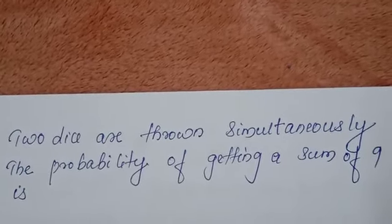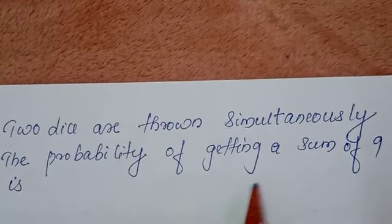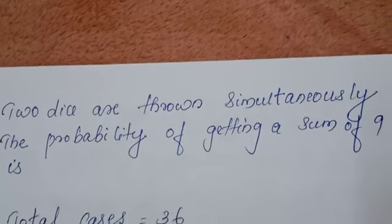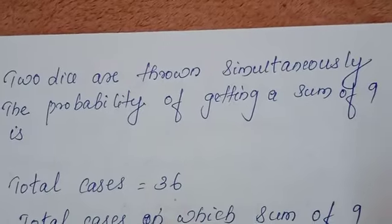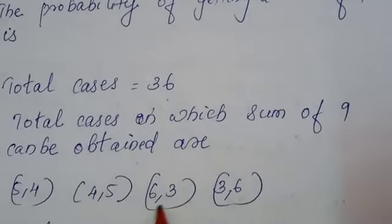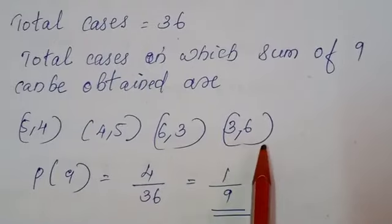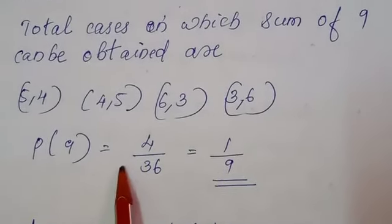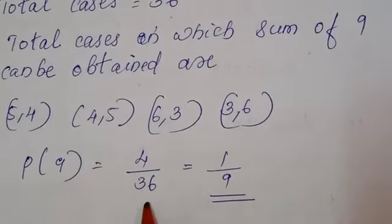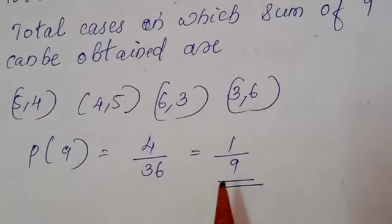Next question is from probability. 2 dice are thrown simultaneously, the probability of getting the sum of 9 is dash. So, in this case, total how many cases? 36 will come. Total cases with sum of 9 are obtained, that is 5, 4, 4, 5, 6, 3, 3, 6. We should add these numbers, we will get the 9, that means sum of 9. So, probability of 9 equals what? 4 by how many? 1, 2, 3, 4, 4 by total, that is 36. While cutting with 4, we will get 1 by 9.